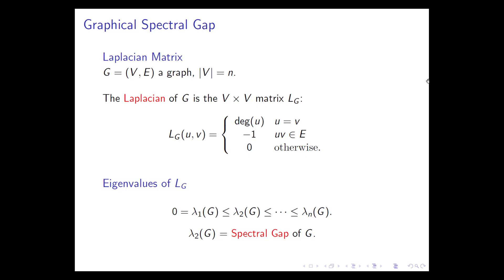There is always a zero eigenvalue corresponding to the all-ones vector. Besides that, the eigenvalues are λ₂ through λₙ, and λ₂ is called the spectral gap of G. It measures the connectedness of the graph in a different way: the bigger λ₂ is, the more connected the graph. Many properties—such as the rate of convergence of random walk on the graph—can be approximated by the spectral gap.